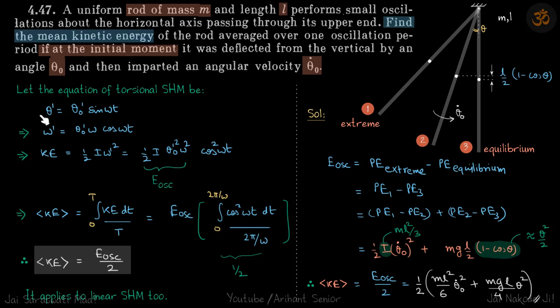So if we differentiate that we get ω' = θ₀' ω cos(ωt). So kinetic energy of this body at a time t is ½Iω'².